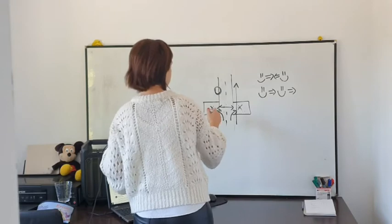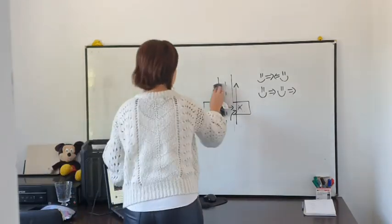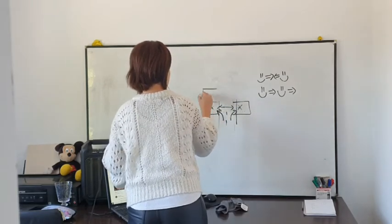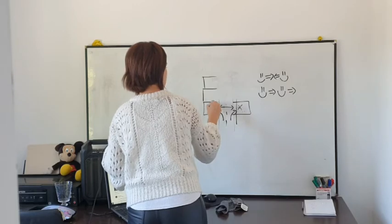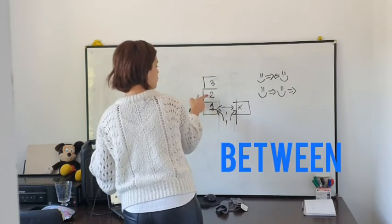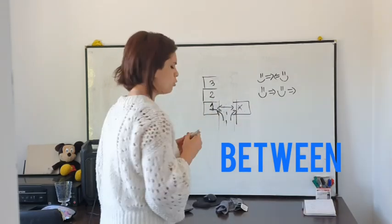And then imagine that, for example, this is the... I'm going to clean this for you to understand. So we have one, two, and three. So we can say that number two is between one and three. So that is between. Those are prepositions. So I think that this is clear.